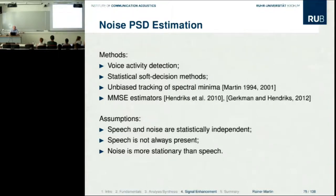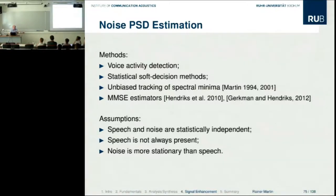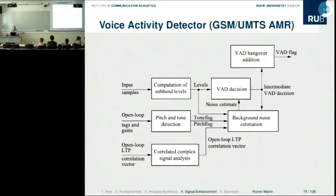Noise is assumed more stationary than speech — this is a crucial assumption. The worst case for all these algorithms is an interfering signal that is simply a second speaker always present, because it is very hard to distinguish the target from the interfering speech.